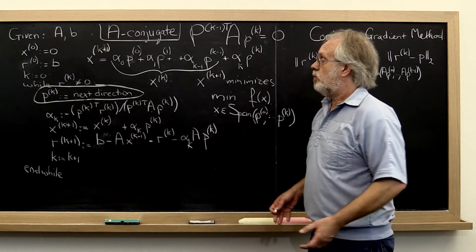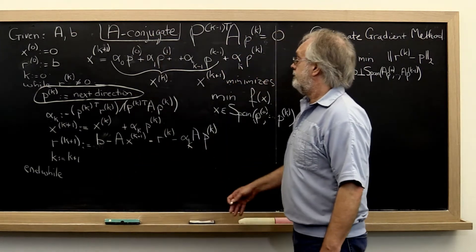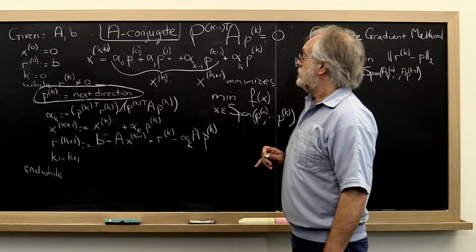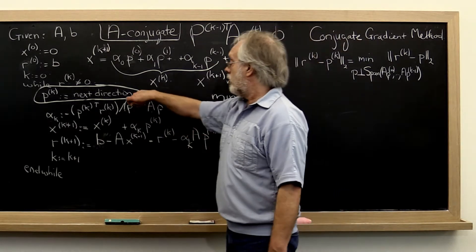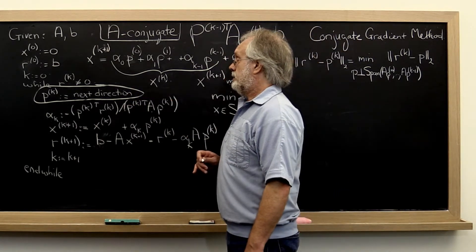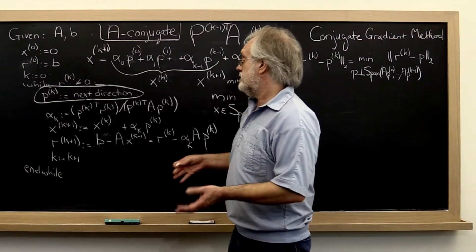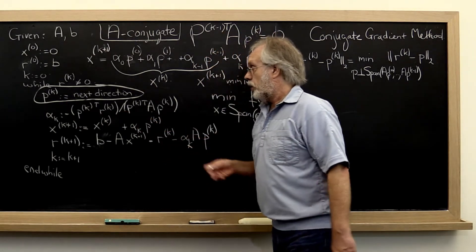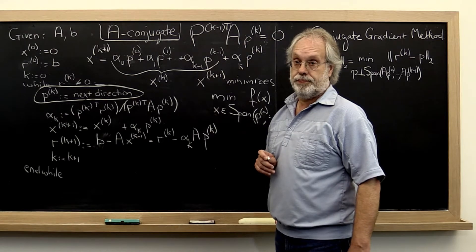So what do we have now? We have a descent direction method. We have figured out that picking the directions to be conjugate is a good thing. We have concluded that there are conjugate directions to be had, and there exists a conjugate direction that is not orthogonal to the current residuals so that we can make progress.